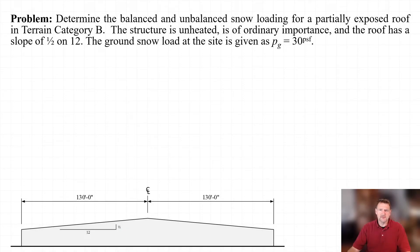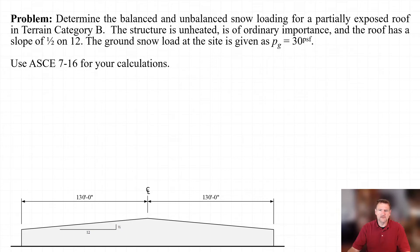In this example we'll be determining the roof snow load for an unheated warehouse building. The structure has a roof with a half-on-12 pitch and the ground snow load is given as 30 pounds per square foot. We'll be working from the 2016 edition of the ASCE 7 standard, and I should note that there are some major differences between the 2016 and the newer 2022 edition of the standard. Let's get started.